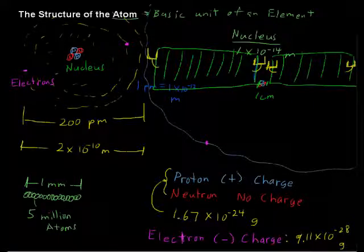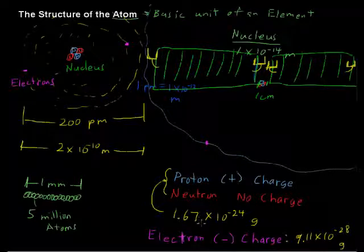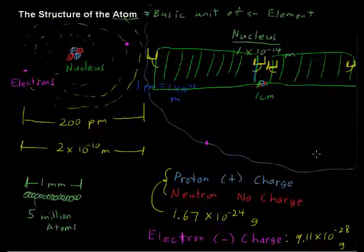According to this decimal, I've rounded it so that they look the same, but the neutron is just a tiny bit more massive than the proton.